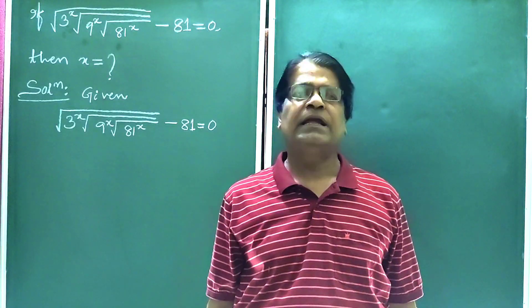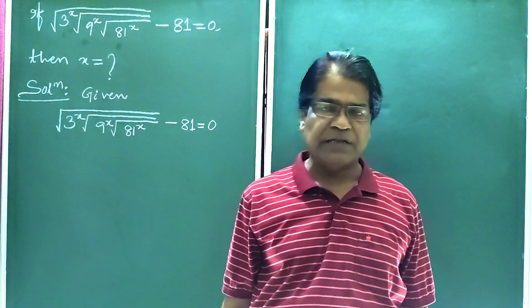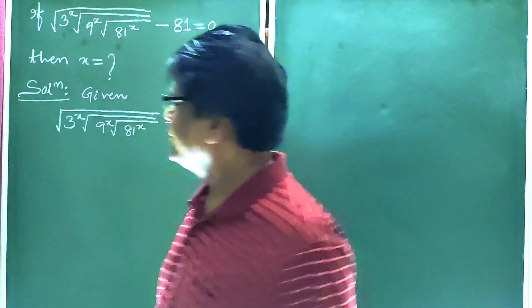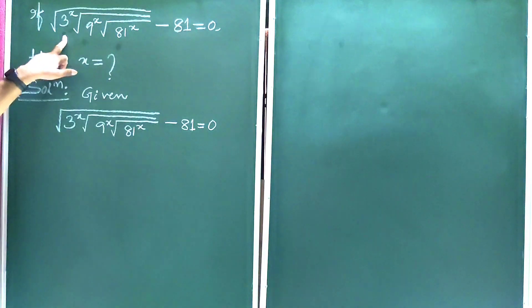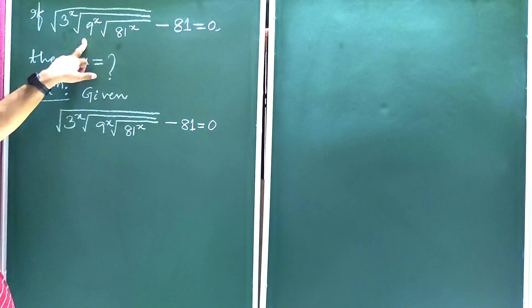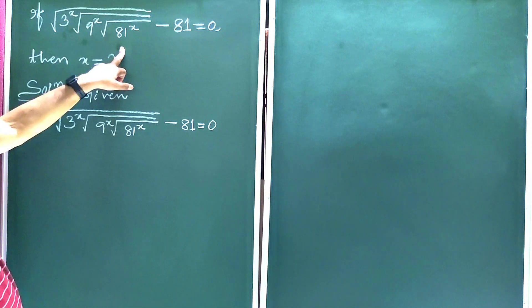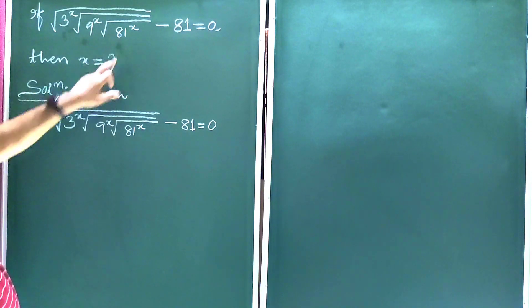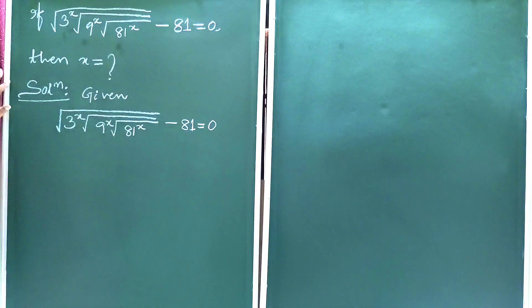Dear students, let us solve an excellent problem on exponential equation. The question is: if the whole root over 3 to the power x, under root over whole root over 9 to the power x, under root over whole root over 81 to the power x, minus 81 is equal to 0, then what is the value of x?